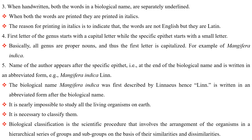Fourth, the first letter of the genus starts with a capital letter while the specific epithet starts with a small letter. Basically, all genera are proper nouns and thus the first letter is capitalized. For example, Mangifera indica. Fifth, the name of the author appears after the specific epithet, that is, at the end of the biological name, and is written in an abbreviated form. For example, Mangifera indica Lin. The biological name Mangifera indica was first described by Linnaeus; hence, Lin is written in abbreviated form after the biological name.